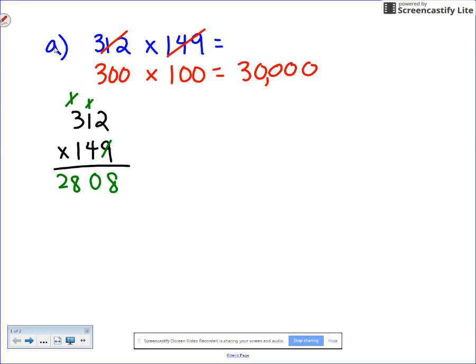Don't need these guys. Now I'm into the tens place, I'm going to start with the four. I need a placeholder so that my first digit will appear here in the tens place. Four times two is eight, four times one is four, four times three is 12.